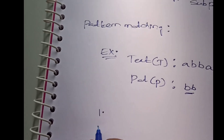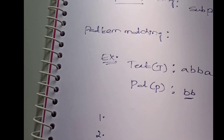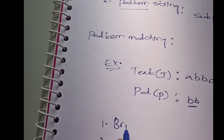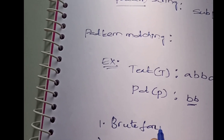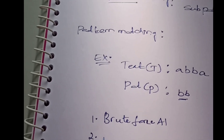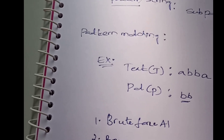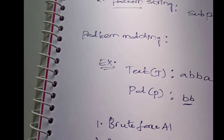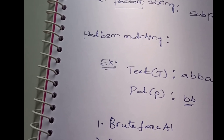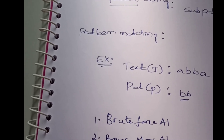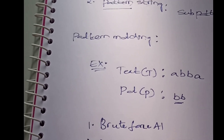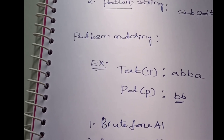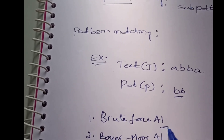We can use different types of algorithms to check this. There are mainly three types: the first one is the brute force algorithm, the next one is the Boyer-Moore algorithm, and the next one is the Knuth-Morris-Pratt algorithm.